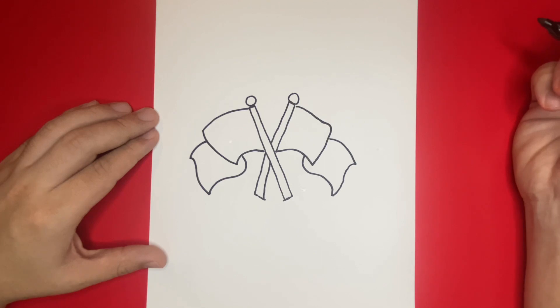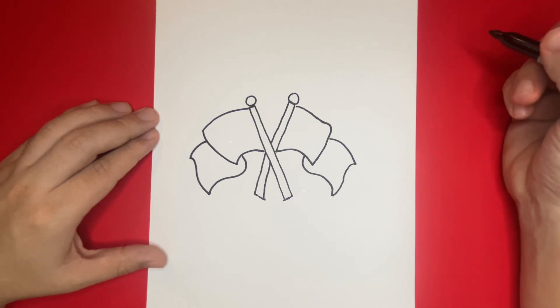Nicely done! Next, on the inside of both of the flags, we're going to want to go ahead and draw the checkered pattern. Keep in mind that if I ever go too fast, or if you need additional time, then pause or rewind the video as you need to.